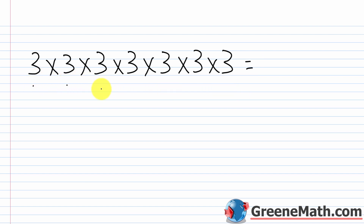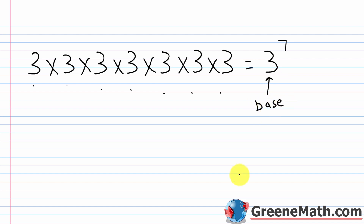I have 1, 2, 3, 4, 5, 6, 7. So I would take this number that I'm multiplying by itself — this 3 — and write it down. Then I would put an exponent, which is a small number that goes in the top right corner, just telling me how many factors of 3 I have. This number right here is called a base. The base is the number that is being multiplied by itself. In this case it's 3, so 3 is the base.